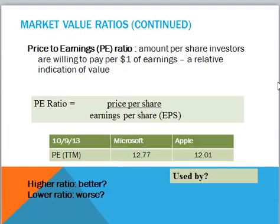The second ratio, the PE ratio, is where we really put market value ratios to work. This is the amount per share that investors are willing to pay per $1 of earnings — a relative indication of value. The price per share is divided by earnings per share. For Microsoft, we saw a PE of 12.77, which means that for every dollar of earnings, investors are willing to pay $12.77. Apple has a PE of 12.01.